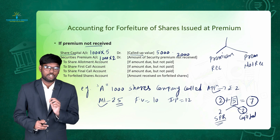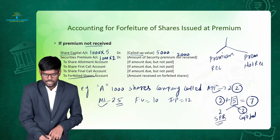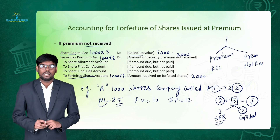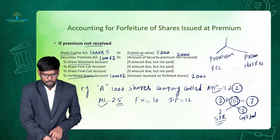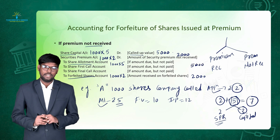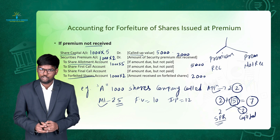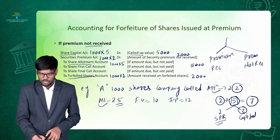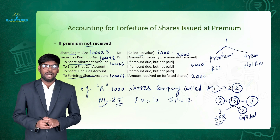Then we credit share forfeiture account for the amount received so far. We received only rupees 2 of application money from the shareholder — 1000 shares multiplied by 2 equals rupees 2,000 — so we credit share forfeiture account for rupees 2,000. We also credit share allotment account for the amount due but not paid: 1000 shares multiplied by 5 equals rupees 5,000. So to summarise: debit share capital, debit securities premium account (because it was not received and must be cancelled), credit share forfeiture account for amount received, and credit share allotment account for amount not received. This entry applies when premium is not received.